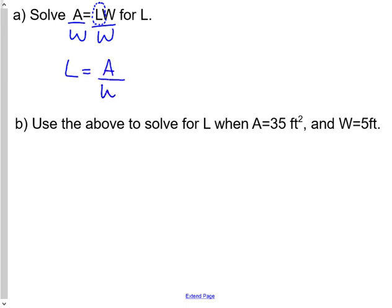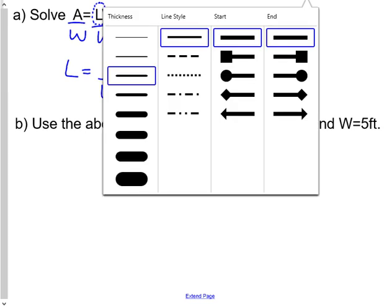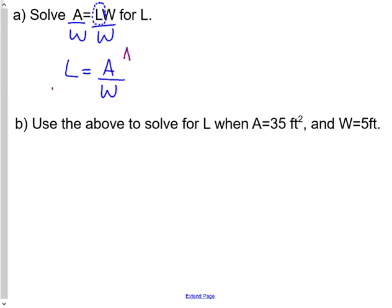Next, now we have a second part. Use that above to solve for L when A is 35 feet squared and W is 5. So now we have values here. We're using this formula here. We've got A is 35W right there, and color code in here. And W is 5, that's right there. So we're going to plug it in. L equals 35 over 5.